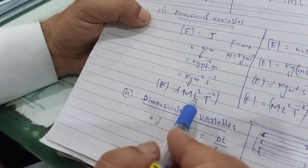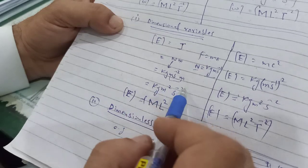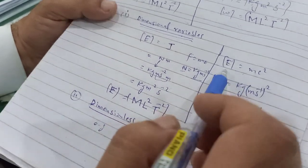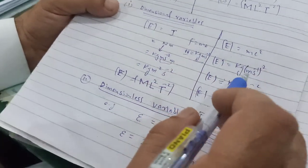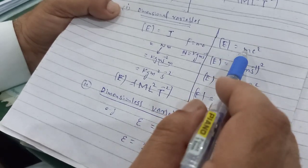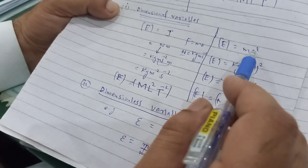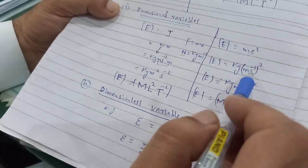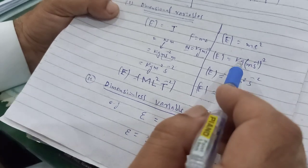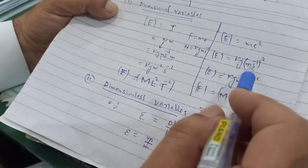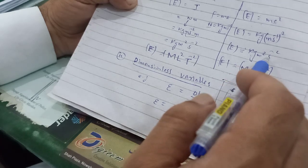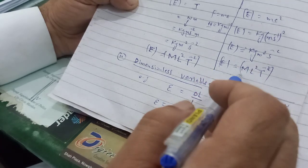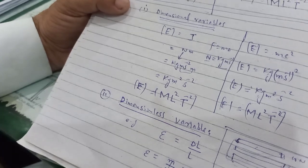Another way to find the dimension of a quantity is through formula. For example, the dimension of energy through E equals mc squared is very simple. M represents mass with unit kg; c represents speed of light with unit meter per second, but it is squared. Simplifying: kg meter square per second square. So the dimension of energy is ML squared per T squared. This was the example of dimensional variables — physical quantities whose values can be varied and whose dimension does exist.